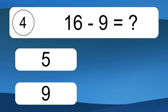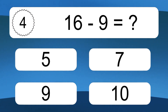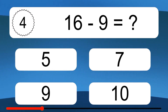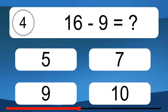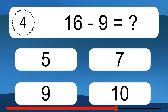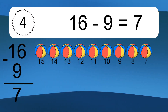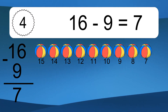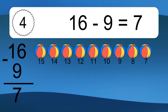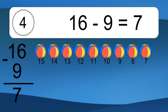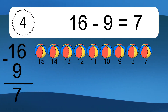16 minus 9 equals what? 16 minus 9 equals 7. Let's count it. 15, 14, 13, 12, 11, 10, 9, 8, 7.